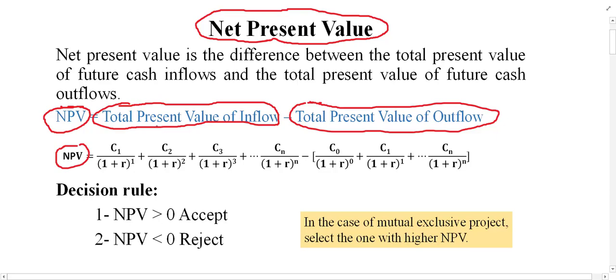Writing this as a formula: NPV equals C1 divided by (1+r)^1, plus C2 divided by (1+r)^2, plus C3 divided by (1+r)^3, and so on up to Cn divided by (1+r)^n. Here, C means the inflow from the project. R means the discount rate — also called the cost of capital, hurdle rate, or interest rate. Sometimes you can write i instead of r.